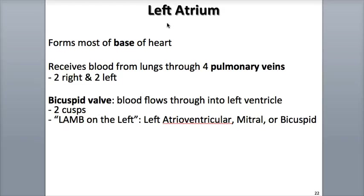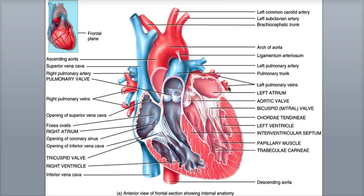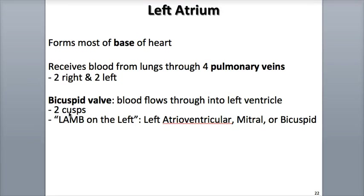The left atrium on the heart's superior left side forms most of the region we call the base of the heart. There are four pulmonary veins shown in the diagram in red that are carrying oxygenated or oxygen-rich blood from the lungs into the left atrium. Blood flows from the left atrium into the left ventricle through the bicuspid valve, also called the left atrioventricular valve, the left AV valve, or the mitral valve because it looks sort of like the two-sided hat a bishop wears called a mitre. It is called the bicuspid because it consists of two cusps or flaps. You can remember this valve with the phrase 'the lamb is on the left,' where the word LAMB is an acronym meaning the left atrioventricular or mitral valve or bicuspid valve.